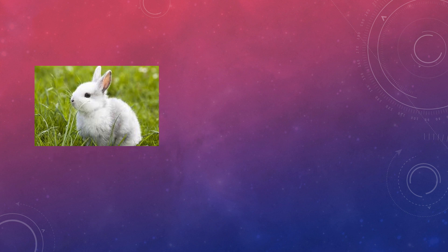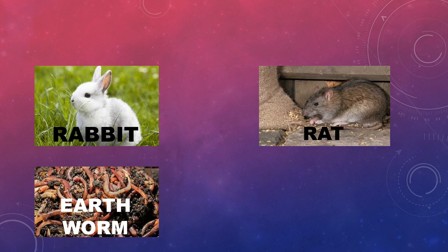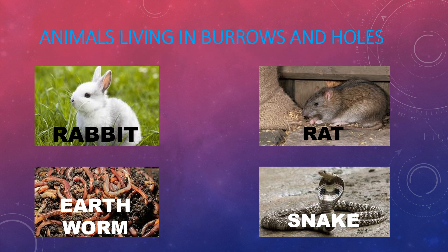Here are some pictures of animals: rabbit, rat, earthworm and snake. Do you know where they live? Rabbit lives in a burrow. Rats, earthworms and snakes live in holes. These are animals living in burrows and holes.